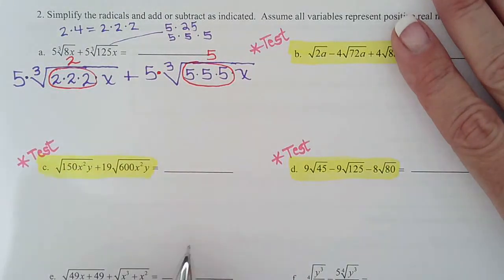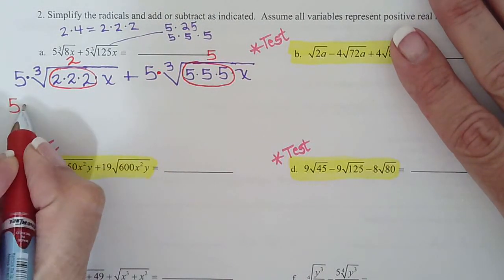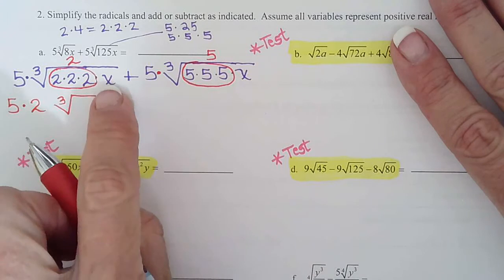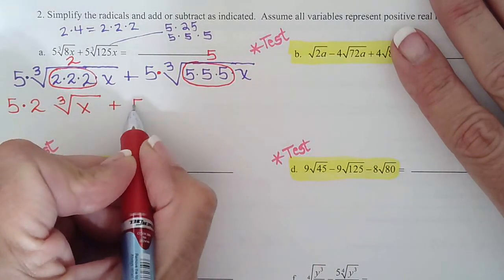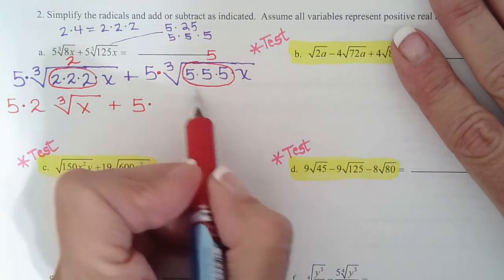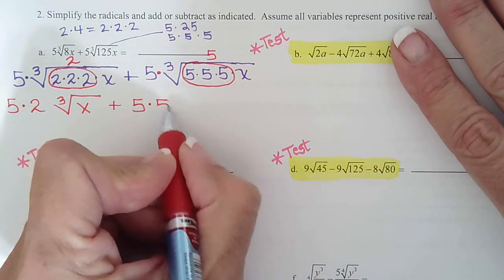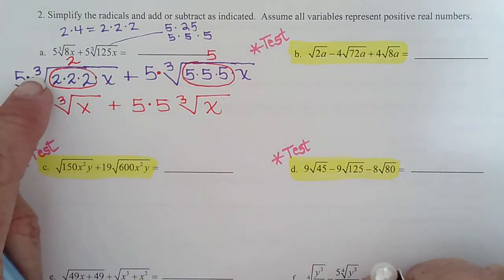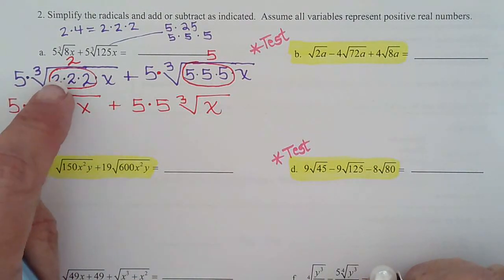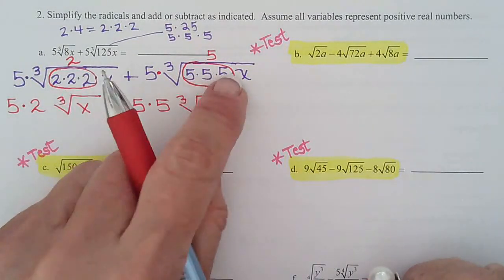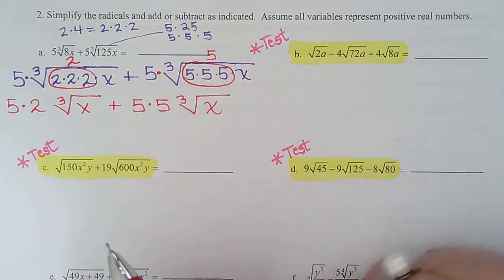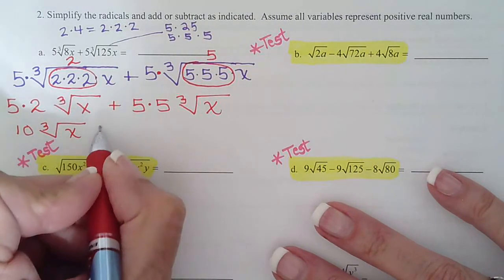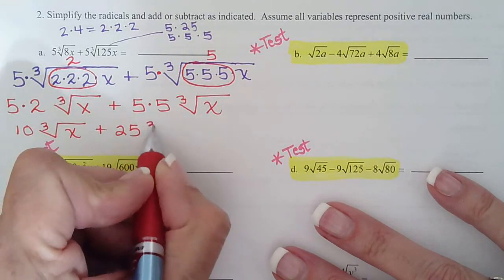So this is really 5 times 2, cube root, and what's left under the radical? Just an x. Plus 5 times, so this is the 5 there. These three fives come out as a single five, cube root x. So that's the problem simplified. We took the triples out because we learned in 6.3. This tells me how many to circle. So three twos is a single two, three fives is a single five. They come out and get multiplied by the numbers in front. So now this is 10 cube root x plus 25 cube root x.